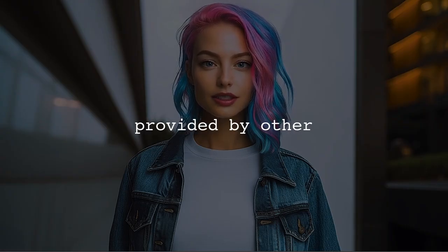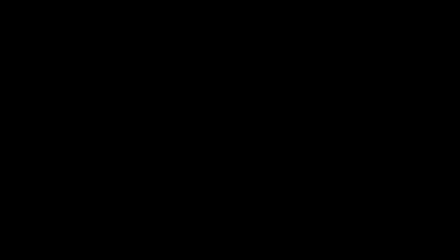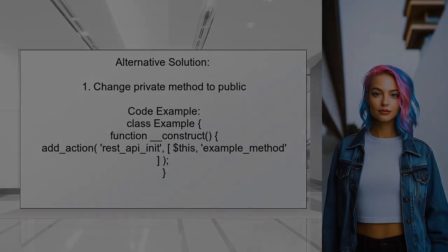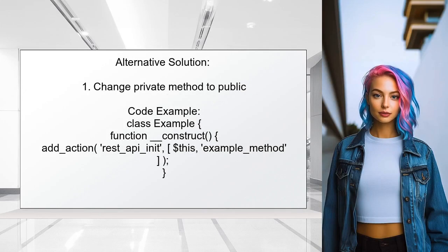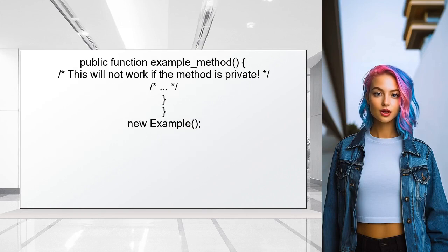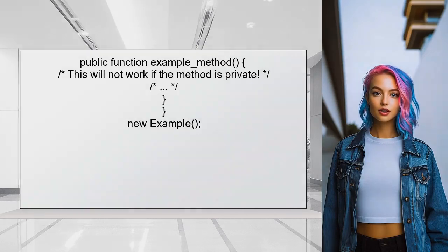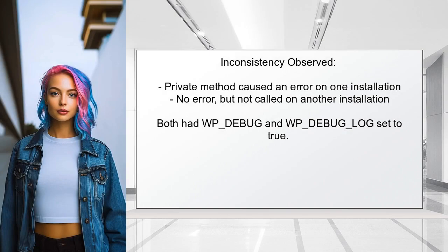Let's look at the answers provided by other users. One user found that their callback method was private, which prevented it from being called. They resolved the issue by changing the method to public. They noted that on one installation the private method caused an error, while on another it simply wasn't called without any errors — an inconsistency that puzzled them.